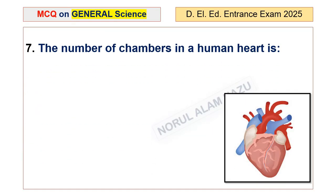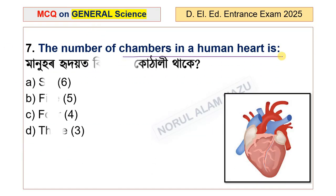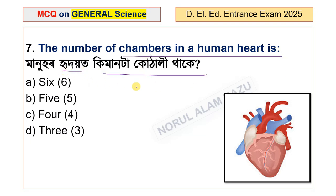Question number 7: The number of chambers in a human heart is? The options are 6, 5, 4, and 3. The answer is 4. There are four chambers in a human heart.